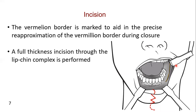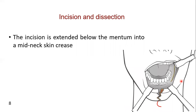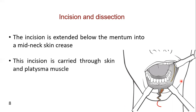A full thickness incision through the lip-chin complex is performed using one of the patterns outlined in the previous slide. The cut edges of the inferior labial arteries are cauterized. The incision is then extended below the mentum into a mid-neck crease and carried through skin and platysma muscle.